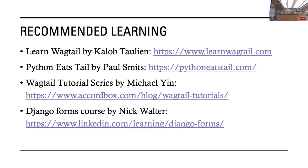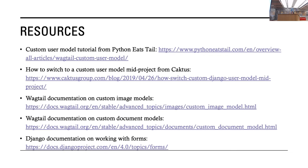I'm also going to share my recommended learning resources for people who are new to Wagtail. I'm infinitely grateful to these folks for helping me through troubleshooting: Learn Wagtail by Caleb, Python Eats Wagtail by Paul Smits, the Wagtail tutorial series by Michael Yen — a Chinese developer whose DevOps content I highly recommend — and a great Django forms course on LinkedIn Learning by Nick Walter. For screen cappers at home, here are some tutorial links, including that mid-project custom user model switch from Cactus, which was a lifesaver.